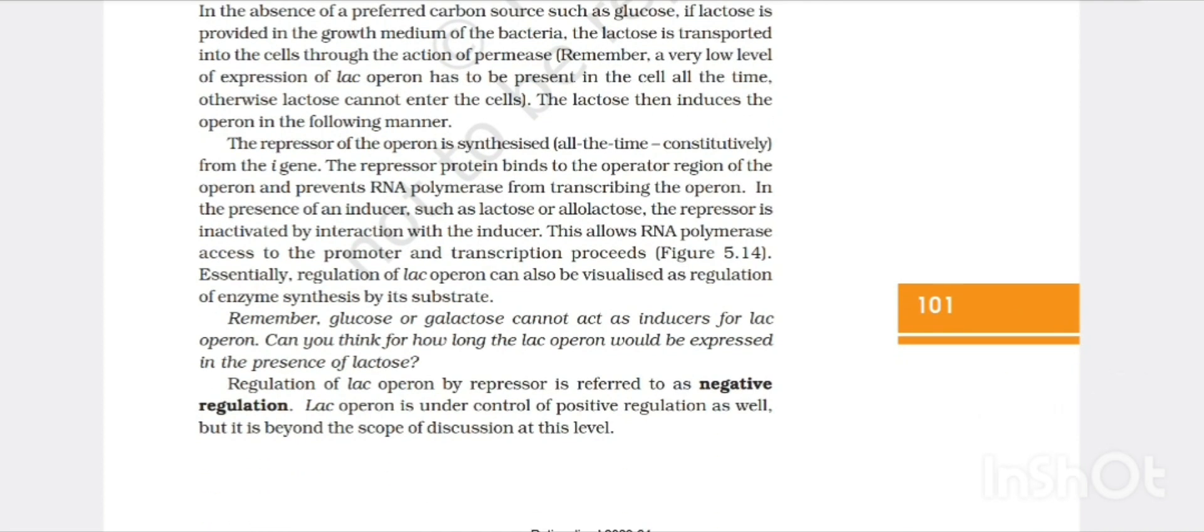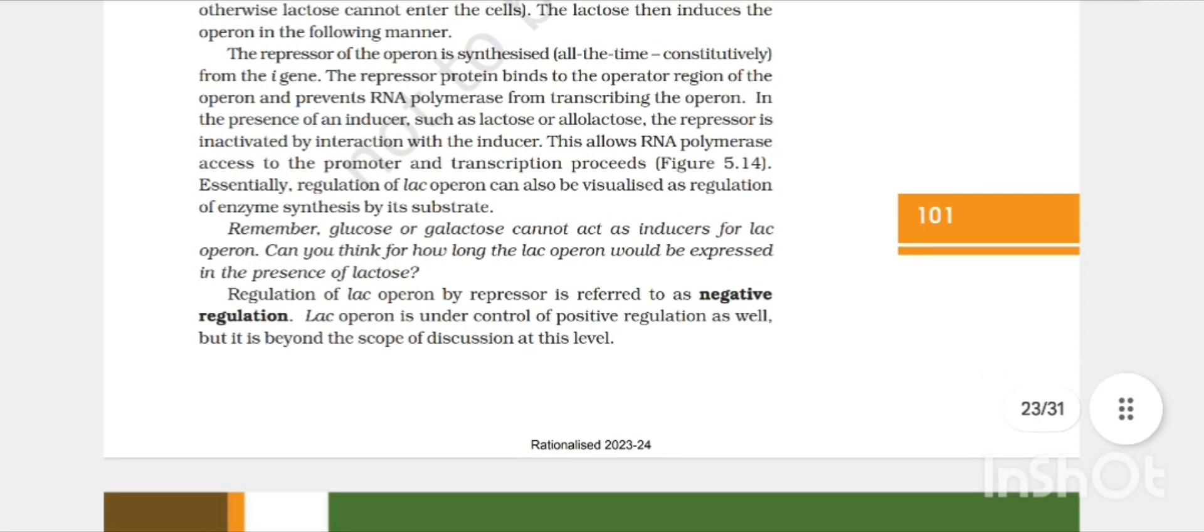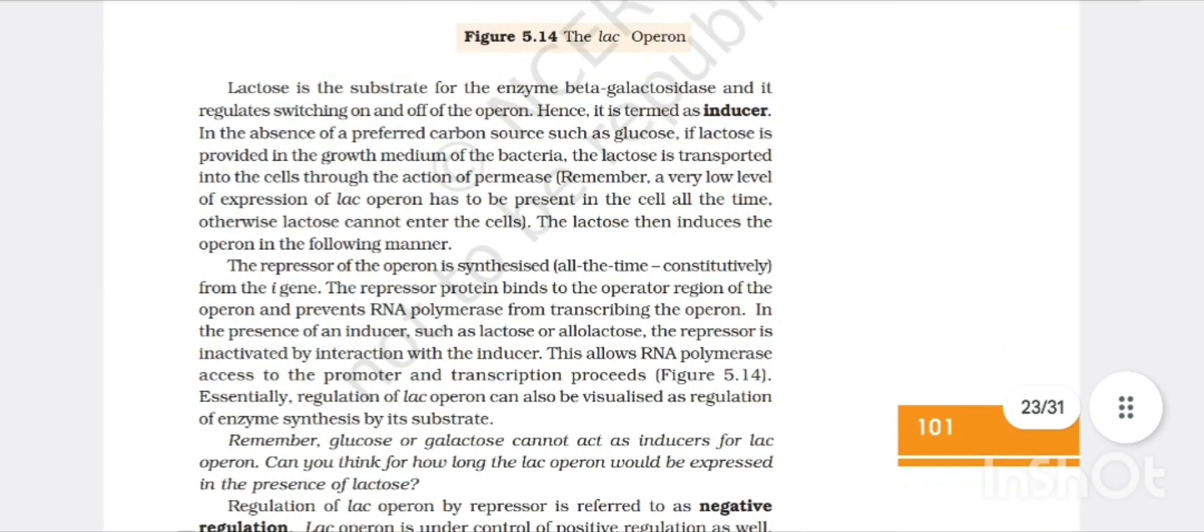It is all about the lac operon. The repressor of operon is synthesized by I gene. Repressor protein binds to operator region of the operon preventing the RNA polymerase from transcribing the operon in case where the lactose is absent. But in presence of inducer such as lactose or allolactose, repressor is inactivated by interaction with the inducer. This allows the RNA polymerase to access the promoter and transcription proceeds.